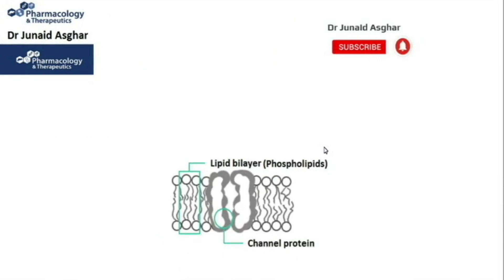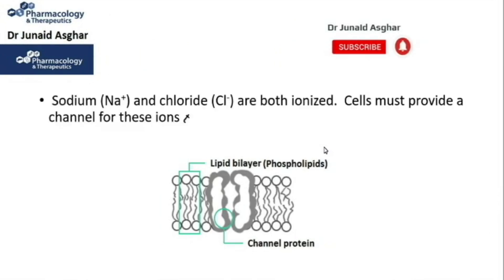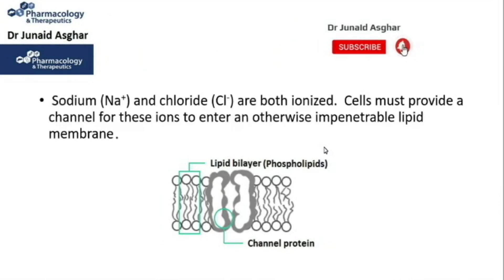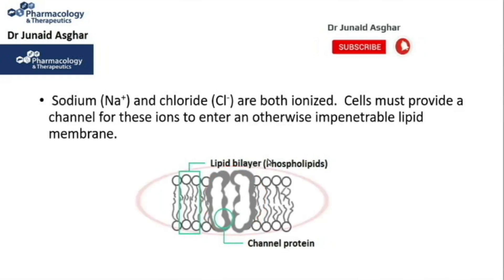Only the uncharged or neutral molecules are permitted across the cell membrane. Charged substances such as sodium and chloride ions cannot passively diffuse through the plasma membrane, and the cells must provide a channel or a special protein known as a channel protein, as shown in the lipid bilayer as highlighted in the figure.